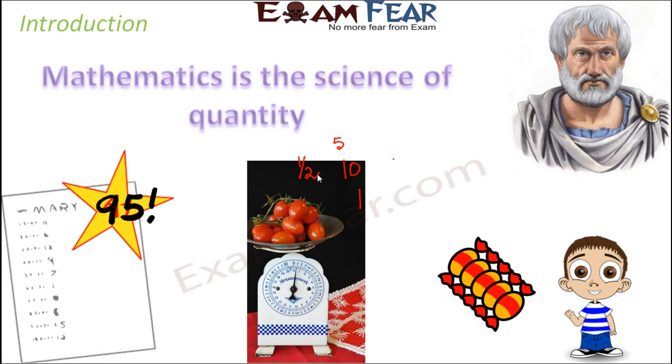Your younger brother comes yelling saying that, wow, I have 5 chocolates with me. What is defining the quantity of chocolates that he has? Nothing but a number. If he says that he has 5 chocolates, 5 is a number which is defining how many chocolates he has.